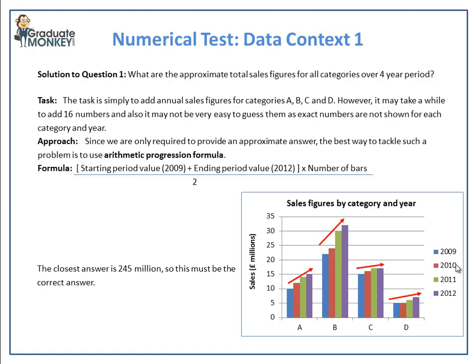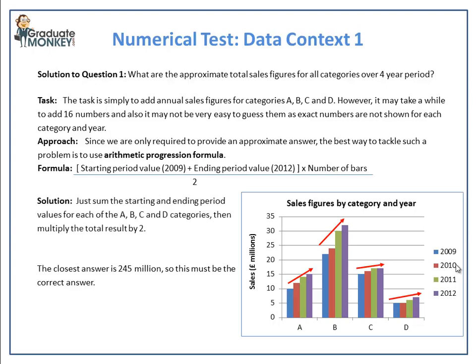So we sum up all the starting and ending period values for each of the categories A, B, C and D. Then multiply the sum by 4, which is the number of bars in each category, and then divide the result by 2. Here are the calculations.